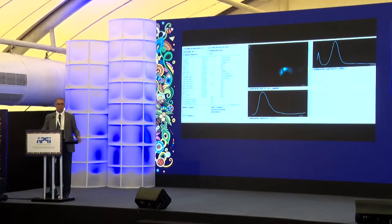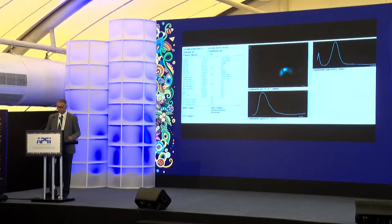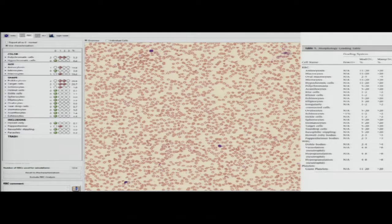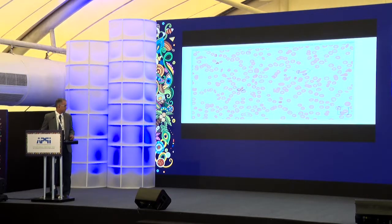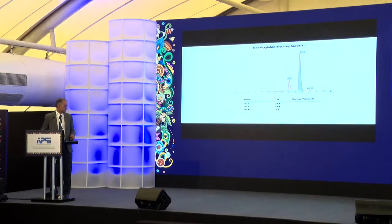This case with a hemoglobin of 9.2 showed target cells and strangely it says sickle cell 1.1 percent with hemoglobin S of 74 percent.